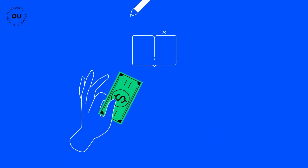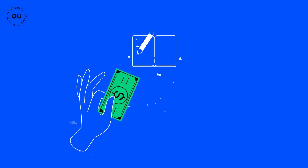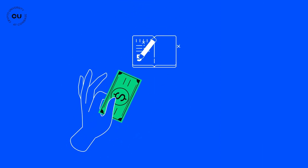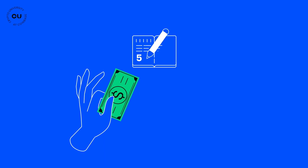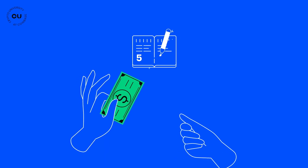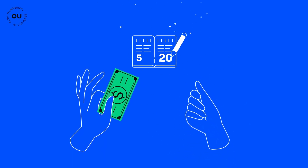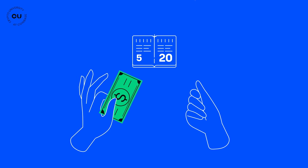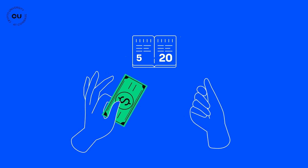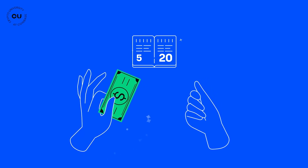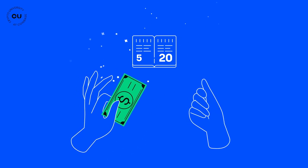So let's start at the beginning. Let's imagine that I pay Sid five bucks. So I write down on a piece of paper that Sarah pays Sid five bucks, and then Sid pays me 20, so he writes down Sid pays Sarah 20 bucks. Think of that piece of paper as the shared public ledger.